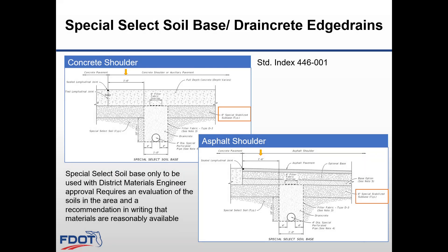The details shown on standard plans 446-001 for special select soil base include a typical layout for concrete pavement with tied concrete shoulders, showing how the drain crete edge drains are placed with regards to the mainline and shoulder, and the longitudinal joint tie bar and seal. This index also shows the layout for concrete mainline with asphalt shoulder, with drain crete edge drain details and the longitudinal joint seal. Notice how the drain crete edge drain is offset 1 foot 6 inches from the joint for both details.